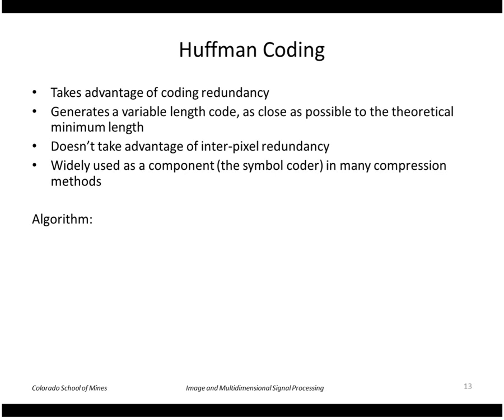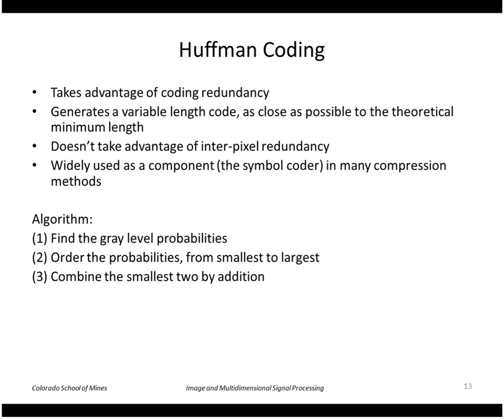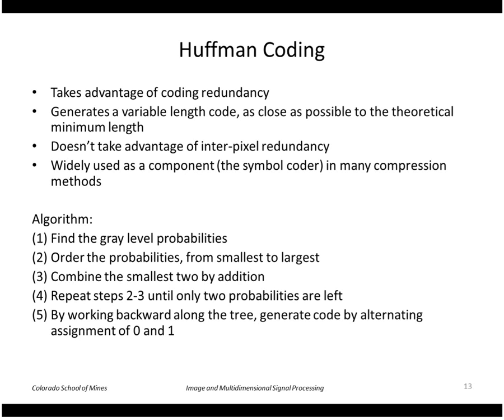The algorithm is fairly simple. You first find the gray level probabilities such as through the histogram. Order the probabilities from smallest to largest. Combine the smallest two by addition. And then repeat steps two and three until only two probabilities are left. And then by working backwards generate a code by alternating assignments of zeros and ones. So this is easier explained in an example.